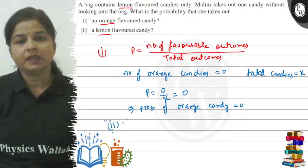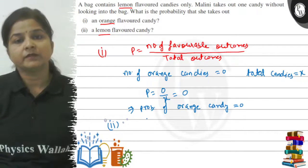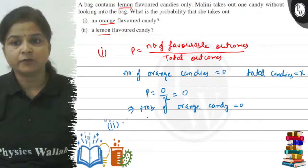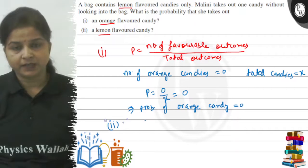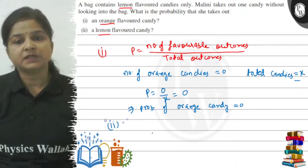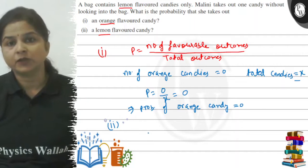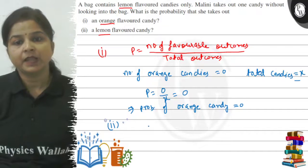Now let's go to the second part. How many lemon flavored candies? All of the candies are lemon flavor. Total candies is X, which means X lemon flavored candies, because all of the candies are lemon flavor.